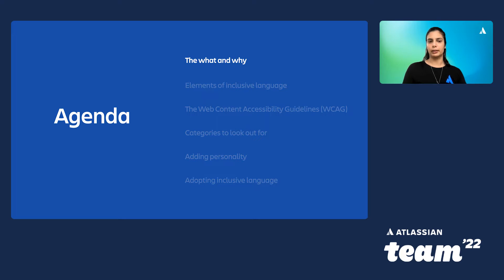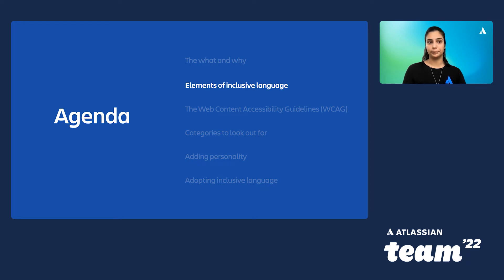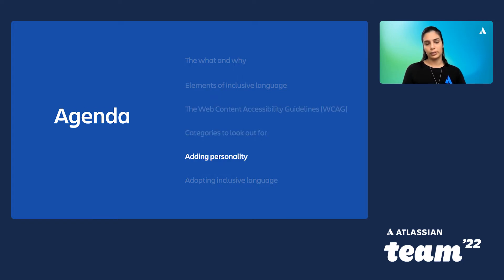So after we talk about inclusive language — what it is and why you should care — we'll look at some elements that help break it down. We'll talk about the WCAG and why it's not just my subjective opinion. We'll go through some do's and don'ts, discuss how being inclusive doesn't mean having no personality, and finally look at some ways you can bring inclusive language into your work.